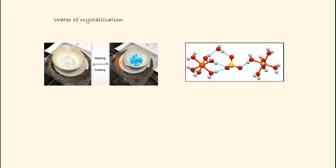We've come across water of crystallization before with copper sulfate. When we heat copper sulfate, we end up with a white substance, which we describe as anhydrous copper sulfate. If we add water to it, we end up with hydrated copper sulfate.